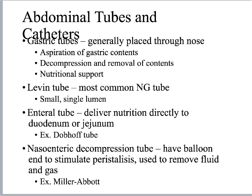The most common form of gastric tube is the Levin tube, often called an NG tube — but in the supply room the package may say Levin, not NG. It's a single lumen, so it can only serve one purpose at a time: either decompression or nutrition, not both. An enteral tube is used primarily for nutrition directly to the duodenum or jejunum, bypassing the stomach — an example is the Dobhoff tube. Nasoenteric decompression tubes have a balloon on the end to stimulate peristalsis and remove fluid and gas; a common example is the Miller-Abbott tube.